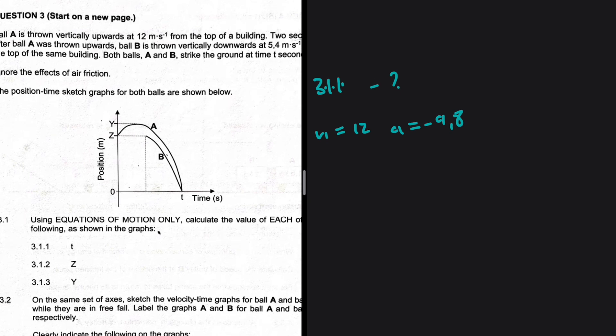For Ball A, with only two known variables (initial velocity and acceleration), I can't calculate time — I need three variables. For Ball B, thrown downwards at 5.4 m/s with acceleration −9.8 m/s², we again don't have enough variables on its own. However, since we have two balls, we can work simultaneously using Ball A and Ball B together to find time t.